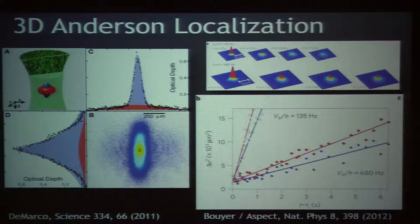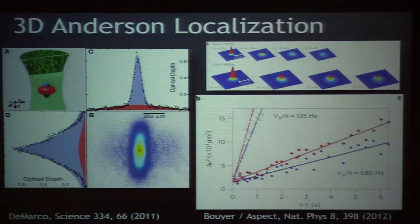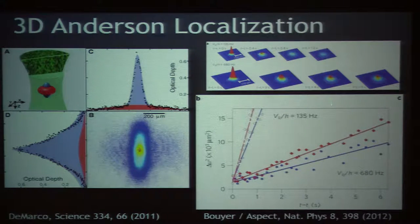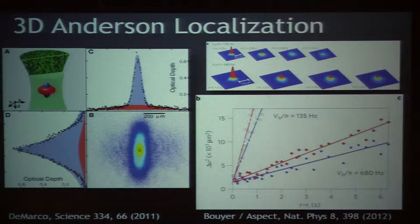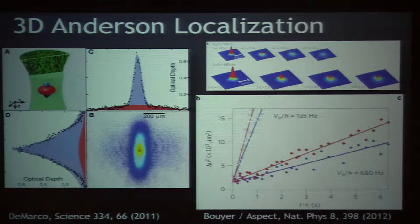In this graph, this is only the diffusing component — when size squared is proportional to t. But this is the mobile component. It's kind of hard to see in their data, but just like us, they have two components present: a mobile part which is diffusing, and a localized part, because the mobility edge cuts into the energy spectrum. These are just fits to the size of the mobile component.